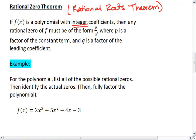Then any rational zero of f must be of the form p over q, where p is a factor of the constant term, and q is a factor of the leading coefficient.